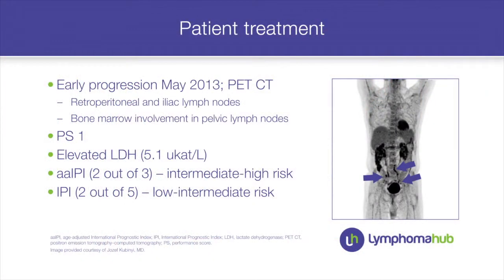The first restaging after three cycles showed the patient was already in partial remission, which was PET positive. After the sixth cycle the patient achieved complete remission — PET negative. We were pleased and administered two more cycles of R-CHOP-21. The final restaging, unfortunately, showed signs of progression with PET-positive enlarged lymph nodes in the abdomen and suspected bone marrow involvement.